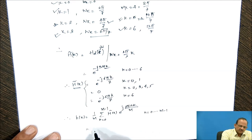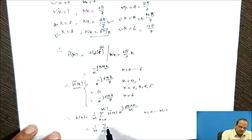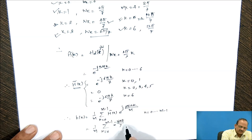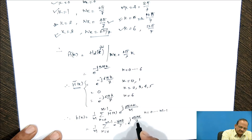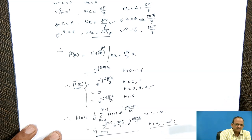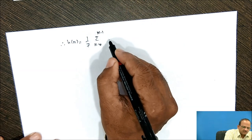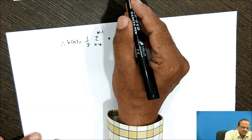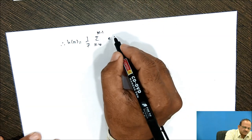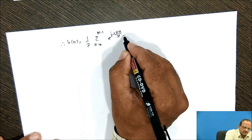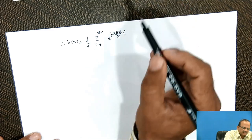Substituting these values, with M=7 and the known H(k), h(n) = (1/7) · Σ_{k=0}^{6} H(k) · e^{j2πnk/7}. Since H(k) = e^{-j6πk/7} for k=0, 1, and 6, and 0 otherwise, this becomes a sum of terms e^{-j6πk/7} · e^{j2πnk/7}. Combining the exponents, 2πk/7 is common, giving exponent (2πk/7)·(n−3).